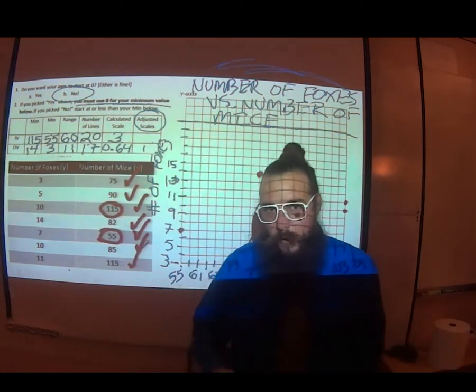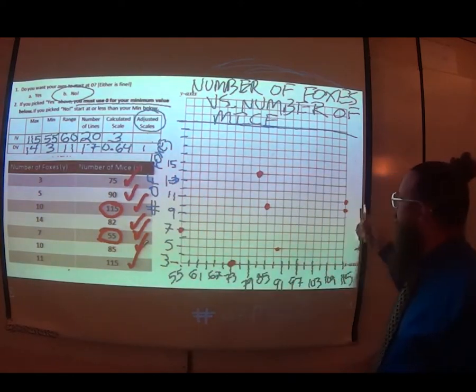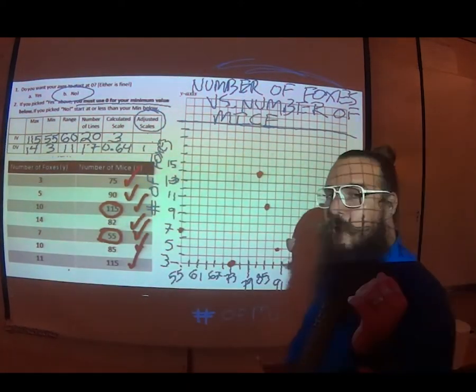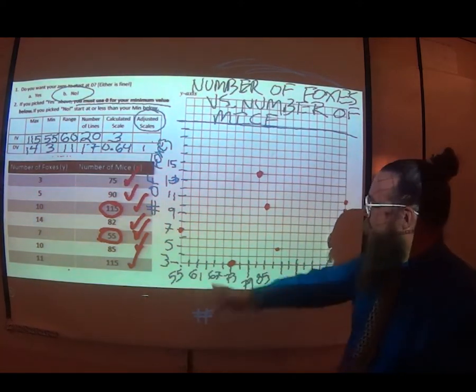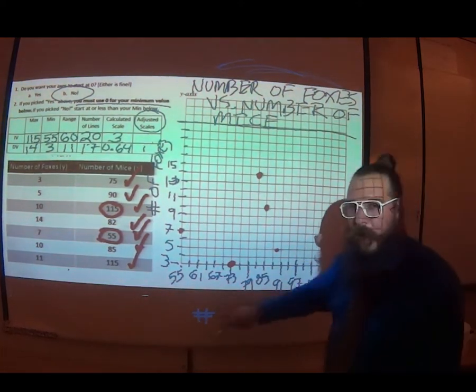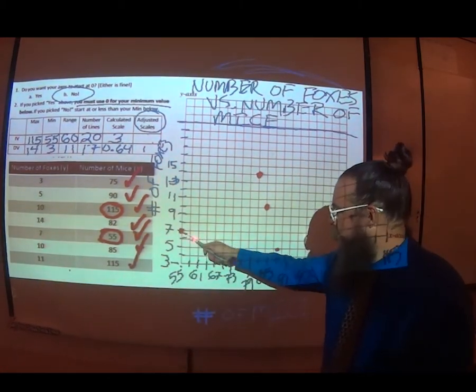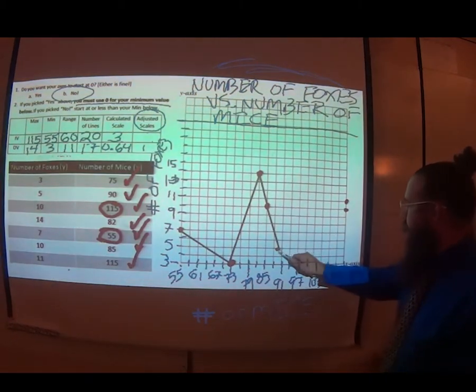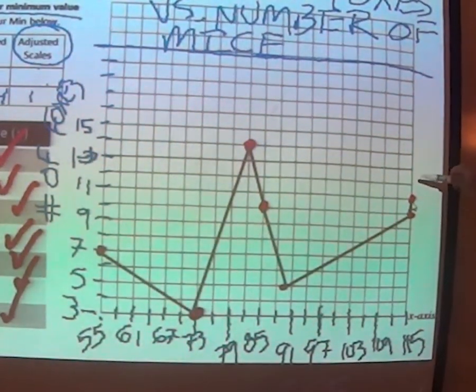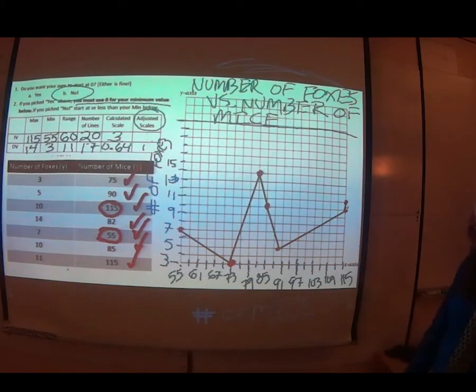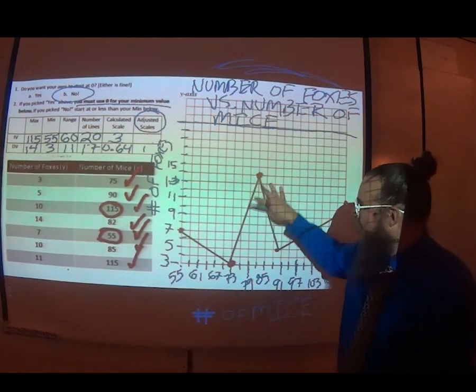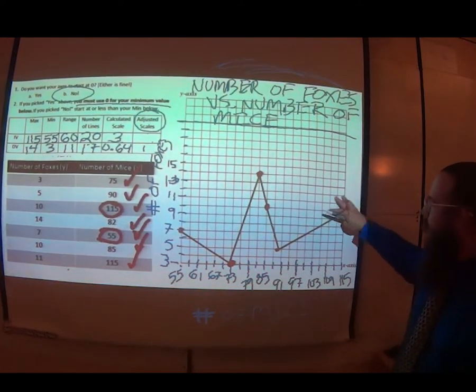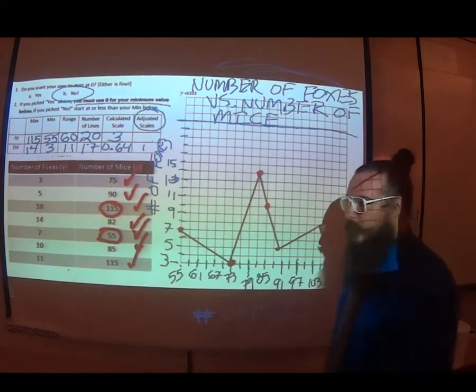You now have two options for how you would like to handle the rest of the graph. This is where you need to check the instructions. If the instructions say to draw a line connecting all the dots, then that is what we will do. You need to make sure you're working from left to right. It's not just like a constellation where you get to pick out the shape you want. Draw lines from left to right connecting the points. This shows a trend that the medium seems to be a good number. When there were too many mice, there weren't quite as many foxes.